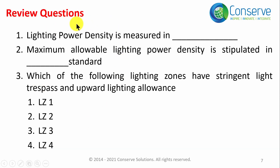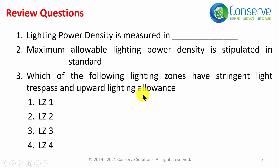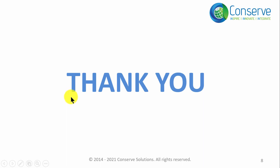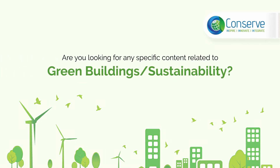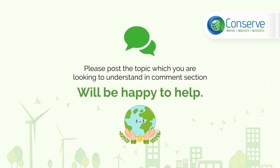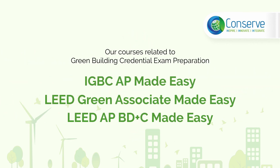Here are a few review questions to assess your understanding of this credit. Please answer them in the comments: Question 1 — What is the unit of Lighting Power Density (LPD)? Question 2 — In which standard is the maximum allowable LPD stipulated? Question 3 — Which lighting zone has the most stringent light trespass and upward lighting allowance: LZ1, LZ2, LZ3, or LZ4? Thank you very much for your attention.